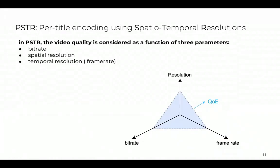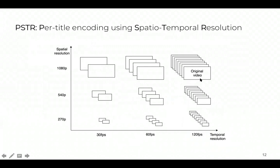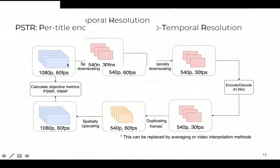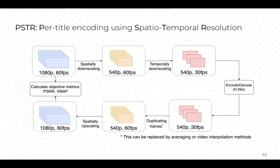So in our proposed method, PSTR, we consider video quality as a function of three parameters: bitrate, spatial resolution, and temporal resolution or frame rate. In PSTR, we spatially and temporally downscale the original video to form a set of representations, and then encode all of these representations at multiple bitrates in order to form the convex hull. We show how scaled objective metrics are calculated for spatially or temporally downscaled videos.